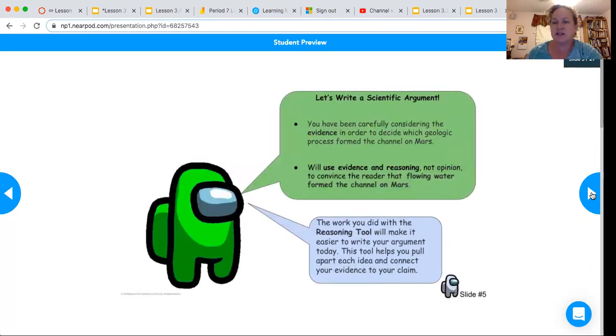So let's write a scientific argument. You have been carefully considering the evidence in order to decide which geologic process formed the channel on Mars. So we're going to use evidence and reasoning, not opinion, to convince the reader that flowing water formed the channel on Mars.